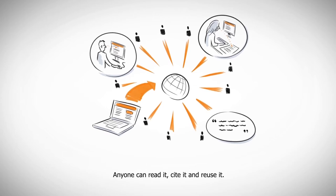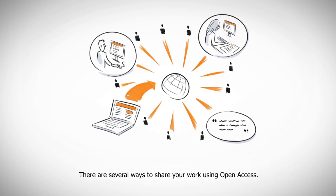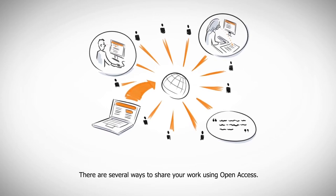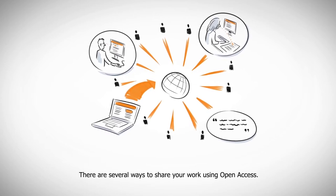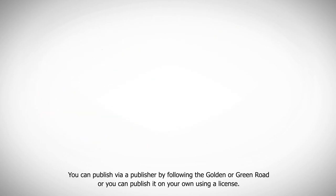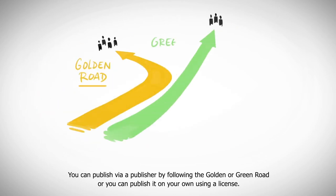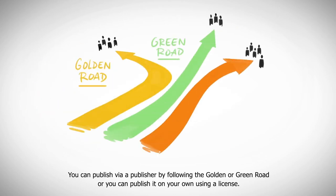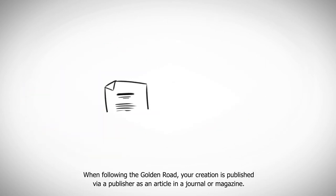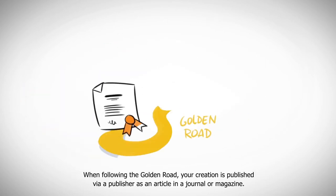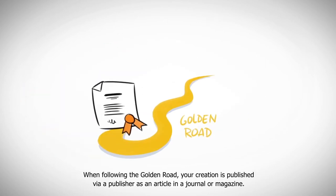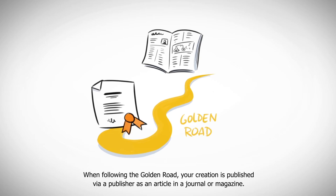Anyone can read it, cite it, and reuse it. There are several ways to share your work using open access: you can publish via a publisher by following the golden or green road, or you can publish it on your own using a license. When following the golden road, your creation is published via a publisher as an article in a journal or magazine.